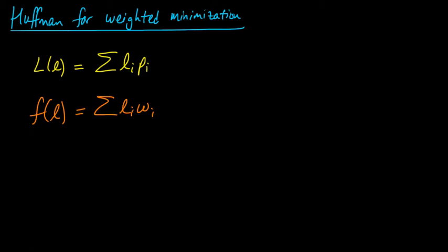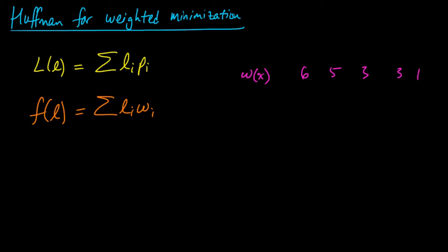To illustrate, let me quickly work through an example. Let's say that instead of p's, we have weights: six, five, three, three, one. And we want to find a prefix code to minimize f of l — that is, to minimize the sum of li times wi over all uniquely decodable codes.